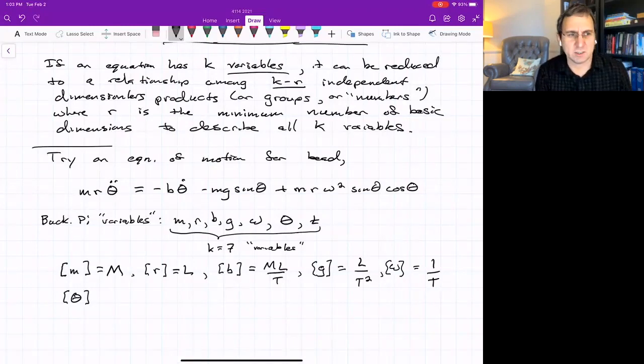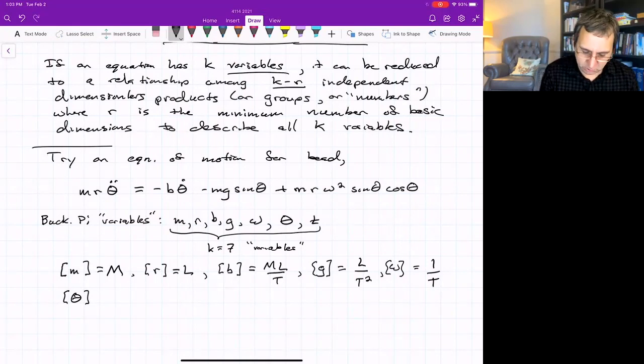What about dimensions of the angle theta? You might be thinking, well, isn't that degrees or something? Well, no. For this equation to be true, you got to write the angle theta in terms of radians. And radians do not have dimension. They're not a mass, they're not a length, they're not a time. So they're already non-dimensionalized. So the way we represent that is we just sort of write one. And then dimensions of time are, of course, time.